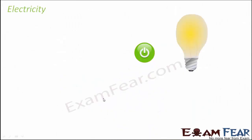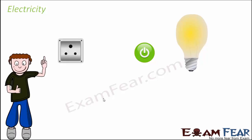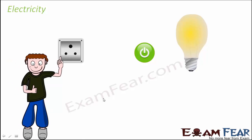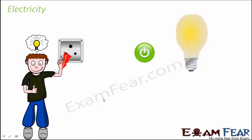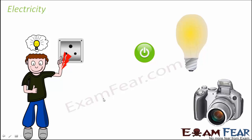When we switch on a bulb, current flows through a circuit and due to the flow of current the bulb glows. Now think of a situation where you have an open socket carrying current and by mistake you try to touch it — what happens? You experience an electric shock, and that electric shock is due to electric current.